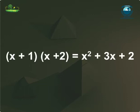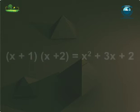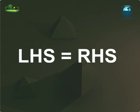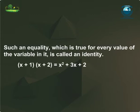So, we found that for any value of x, left-hand side is equal to right-hand side. Hence, such an equality which is true for every value of the variable in it is called an identity. Thus, (x+1)(x+2) = x²+3x+2 is an identity.